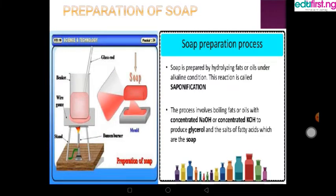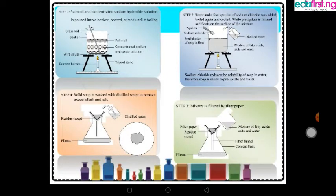Now let's look at the preparation of soap — how is soap prepared? The process is called saponification. It involves hydrolyzing fat or oil under alkaline conditions. The oil is treated with sodium hydroxide, which is caustic soda, or potassium hydroxide, which is caustic potash, to produce glycerol and the salt of fatty acid, which is our soap.